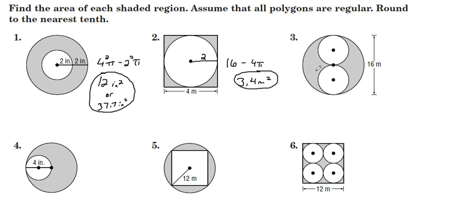For number 3, we have a big circle minus a small circle. Big circle has a radius of 8, 8 squared is 64, so we have 64 pi minus the two smaller circles, so we'll have two of them, times pi, and the radius of each of those is 4. 4 squared is 16, so 64 pi minus 2 times pi times 16, 100.5 square meters.